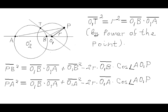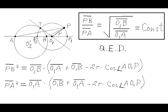Now we can substitute O1B times O1A for R squared. Now we can factor the right-hand sides of both equalities, and conclude that the ratio PB to PA for any arbitrary point P on the circle O1 equals square root of the ratio of O1B to O1A, which is constant for these two circles and these two given points A and B.